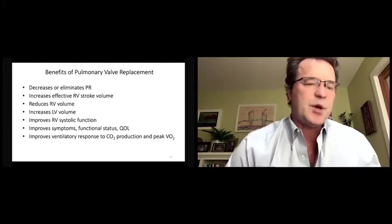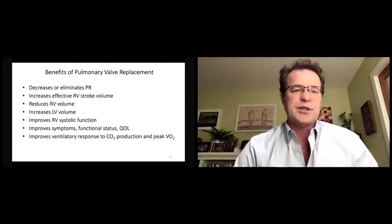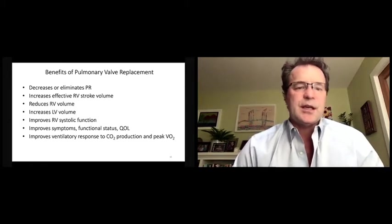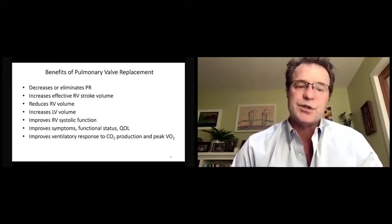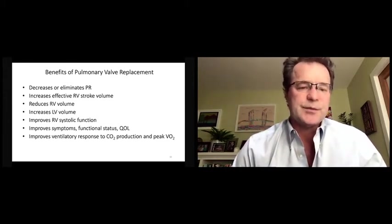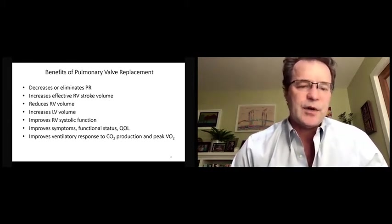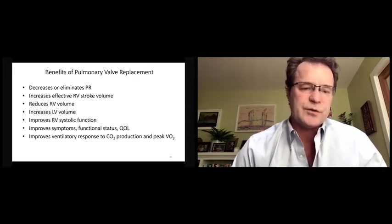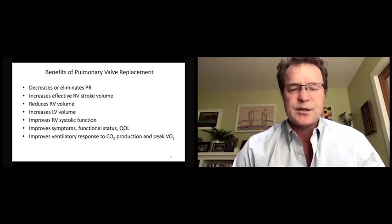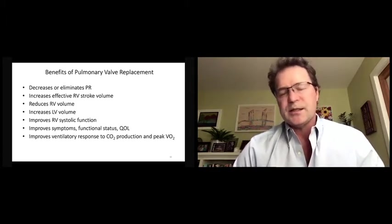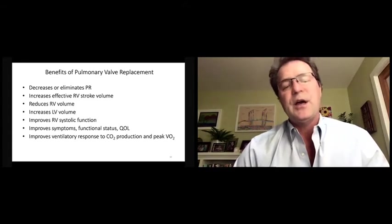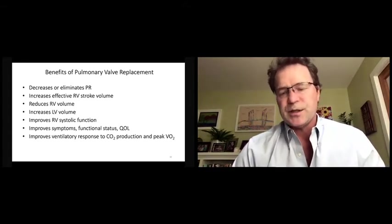There are not specific indications for transcatheter pulmonary valve replacement, but they should be at least this low of a threshold and potentially lower. The benefits of pulmonary valve implantation are relatively straightforward. It decreases or eliminates regurgitation. It increases the effect of right ventricle stroke volume, reduces right ventricular diastolic and systolic volumes. It increases LV volume, improves right ventricular systolic function, symptoms, functional status, quality of life, and exercise cardiopulmonary function. So placement of a pulmonary valve when there's severe pulmonary regurgitation is clinically beneficial.